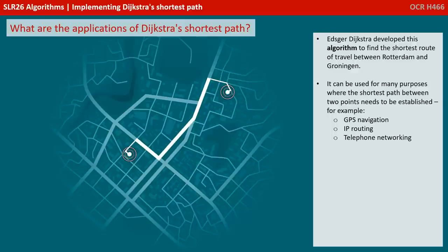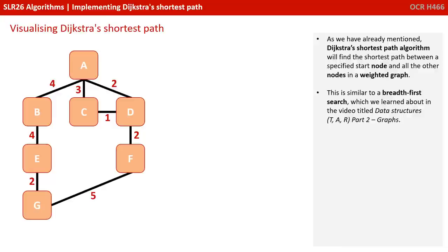Dijkstra developed this algorithm to find the shortest route of travel between Rotterdam and Groningen. It can be used for many purposes where the shortest path between two points needs to be established — for example, GPS navigation, IP routing, and telephone networking.